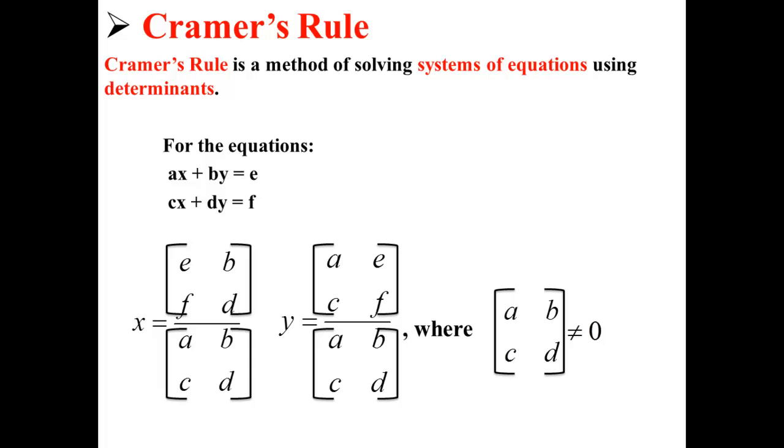x is equal to the matrix E, B, F, D divided by the matrix A, B, C, D, while y is equal to the matrix A, E, C, F divided by the matrix A, B, C, D. This is where the matrix A, B, C, D is not equal to zero.